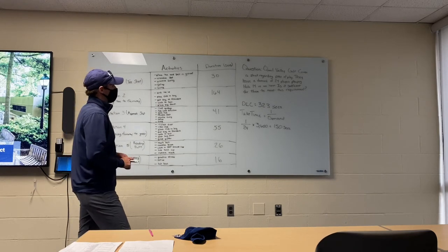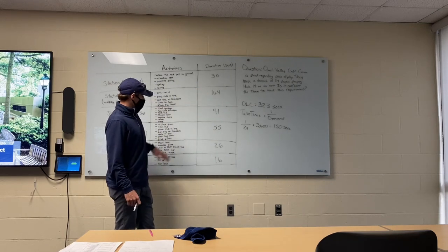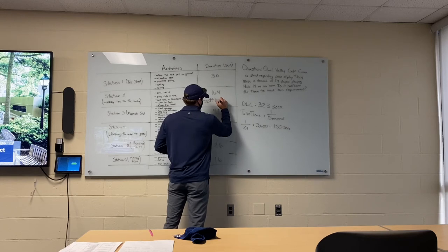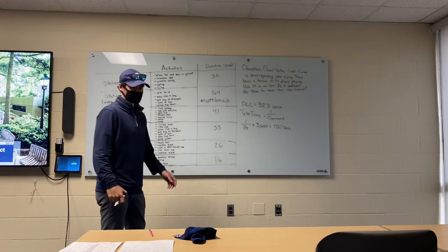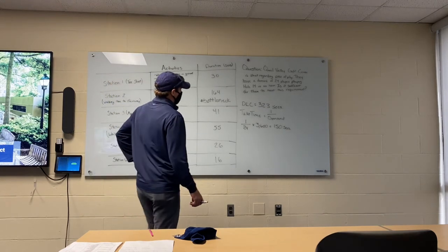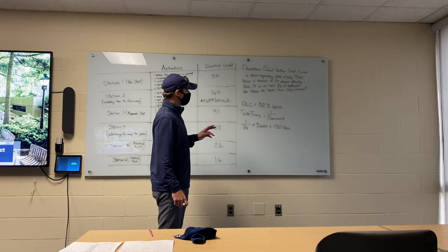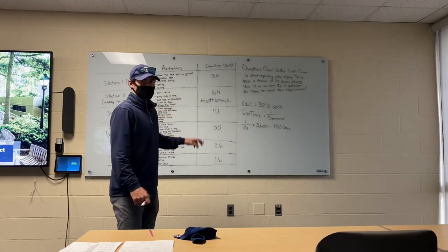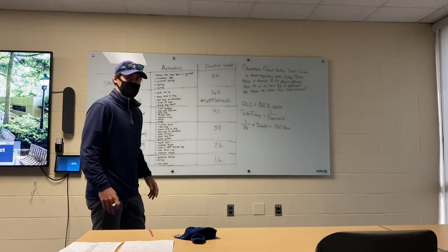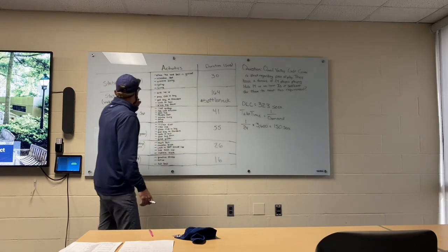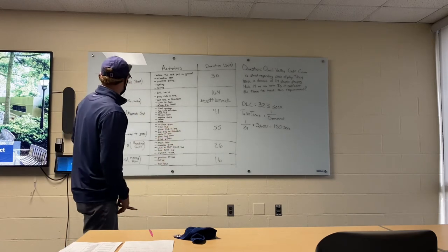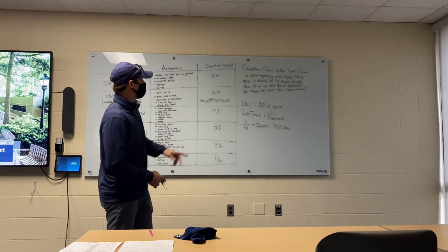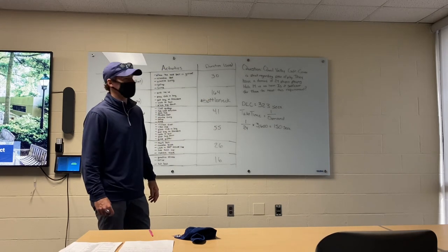Takt time in this sense means getting all 24 players done on hole 14 in just one hour. Something to keep in mind is that 164 seconds outweighs all the other stations — this 164 seconds is actually going to be the bottleneck station. The bottleneck is the station with the highest duration. In order to get the 24 players done in an hour, at station two — walking from tee to fairway — it's important to speed up pace of play. If you're playing in a group, players should be doing step three while one person is doing step two, or when someone's hitting their tee shot in station one, another person is already walking from the tee to the fairway. This speeds up the process and makes it possible for Quail Valley to allow hole 14 to have 24 players play in just one hour.